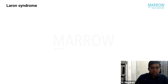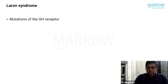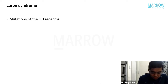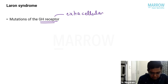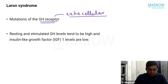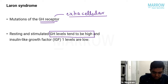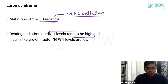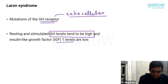In Laron syndrome, the growth hormone receptor has three domains: intracellular, extracellular, and transmembrane. The defect is specifically in the extracellular domain. Growth hormone is secreted from the pituitary but cannot exert its action, so as feedback, growth hormone levels tend to be high. However, IGF-1 levels are low because the liver cannot produce it without effective GH signaling.